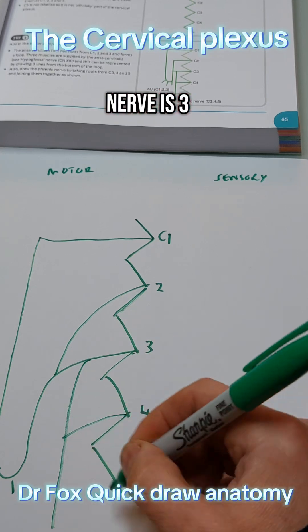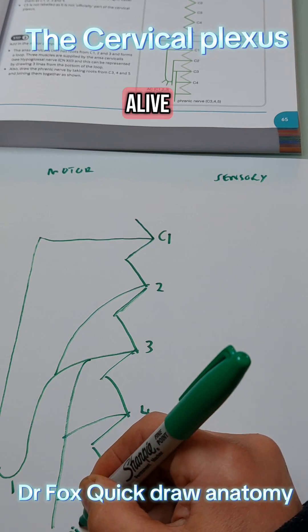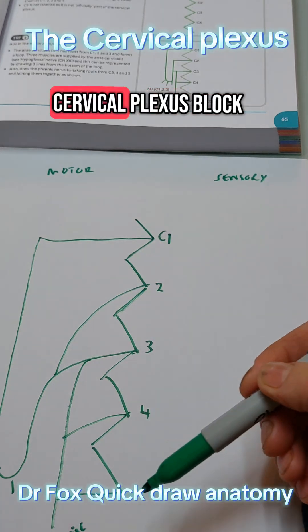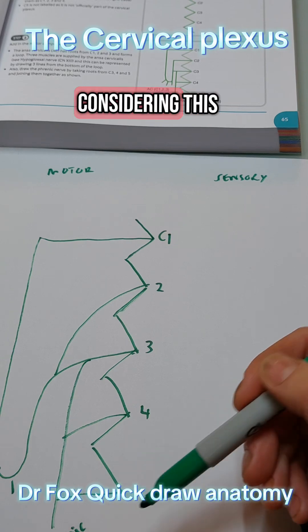So the phrenic nerve is 3, 4, 5, keeps the diaphragm alive. Not actually part of the cervical plexus, but if you did a deep cervical plexus block you're going to get the phrenic nerve. So it's worth considering this.